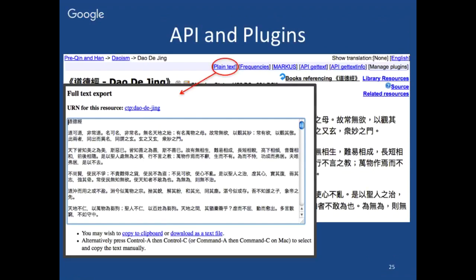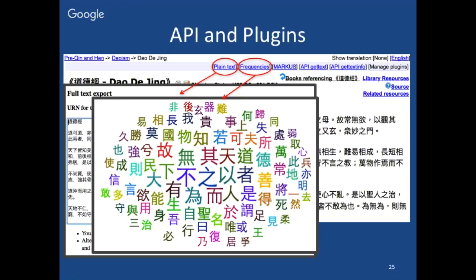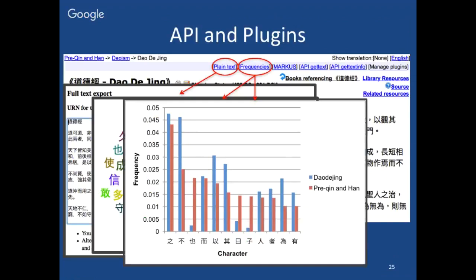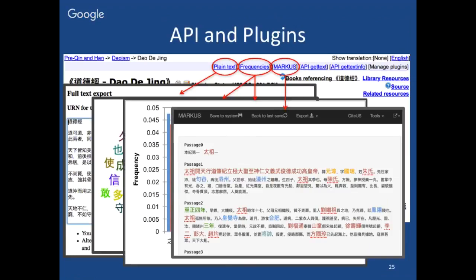The next idea is textual plugins — basically the same idea expanded to textual objects. The simplest of these is a plain text export function. I mention this in particular because the plain text export function is actually an external plugin, which means you can download it, modify the code, and make it do whatever you want. For example, if you wanted a simple TEI document instead of plain text, you could download the code, modify it, and create your own plugin to do that. You can do word clouds, frequency comparisons, and also link to entirely different tools like the textual markup platform, which does named entity identification on Chinese texts.